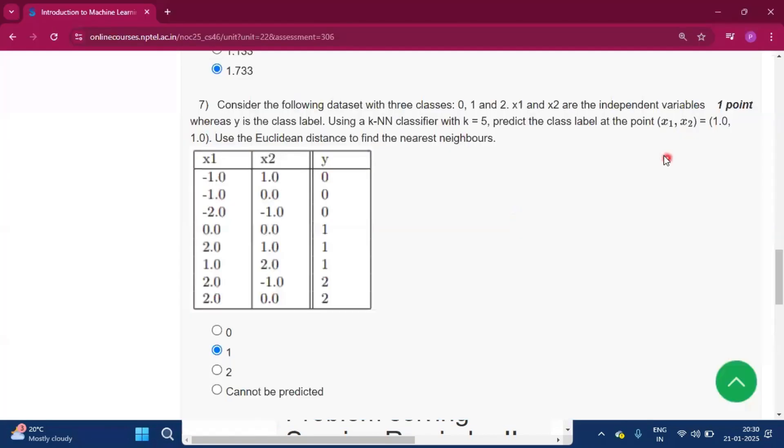Look this value x1 and x2, 1.0 and 1.0. Now for the first data that is x1 is given minus 1.0 and x2 is given as 1.0 and y value is given 0. So we have to use the Euclidean distance to find the nearest neighbor.